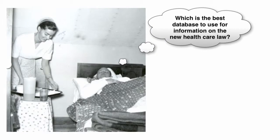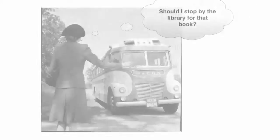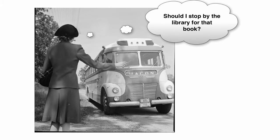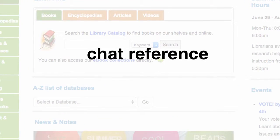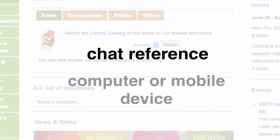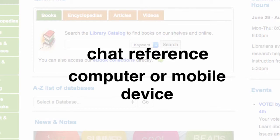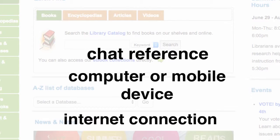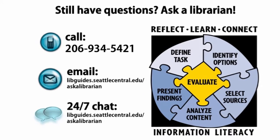So you might still be feeling crummy, up too late, or miles from the library on a bus, but you can get the help you're looking for through the Seattle Central Library chat reference service. All you need is a computer or mobile device with an internet connection. And remember, chat reference isn't the only way to get help when you're outside the library. You can also give us a call or send us an email and we'll help you find whatever it is that you need.